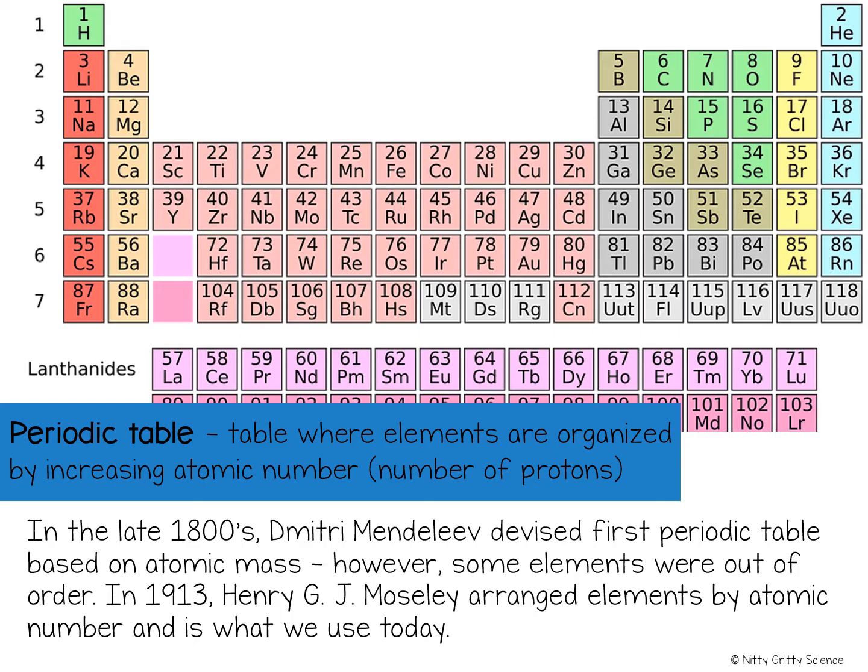Mendeleev's early periodic chart arranged all the elements known at the time in order of increasing atomic mass. While Mendeleev was successful, it did need some changes. In 1913, the work of Henry G.J. Mosley created an arrangement that we use today.